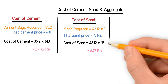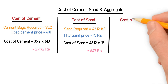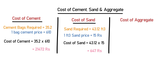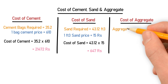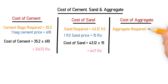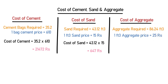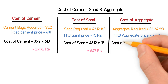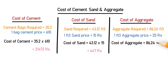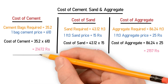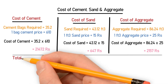Now let's calculate the cost of aggregate. The aggregate required is 86.24 cubic feet, and the price for one cubic foot of aggregate from the market is 25. So the cost of aggregate = 86.24 × 25 = 2,157.